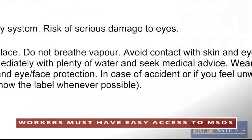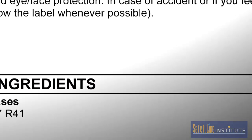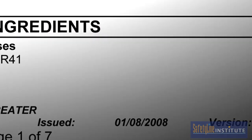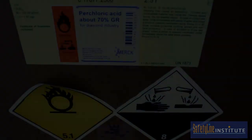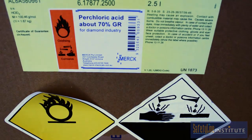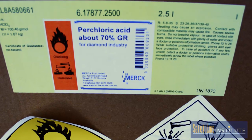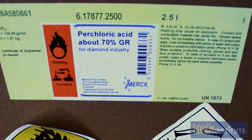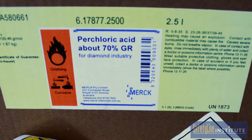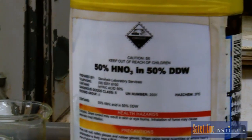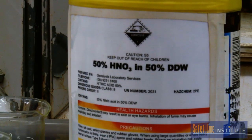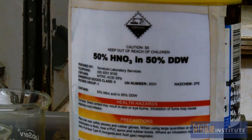The MSDS must be the most up-to-date version, as they are updated at least every five years. Containers of hazardous substances in the workplace must be clearly labelled with the original supplier's label. If chemicals are transferred to another container and not used immediately, that container must be labelled with at least the chemical name and risk and safety phrases.